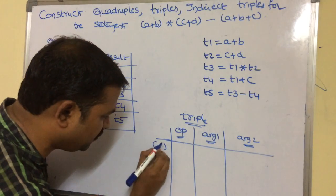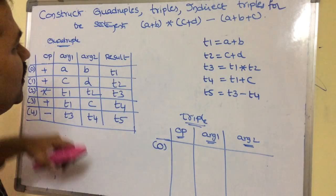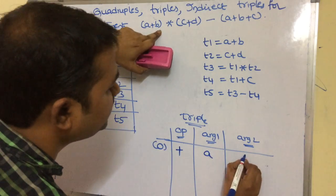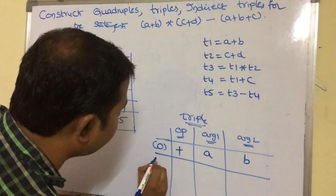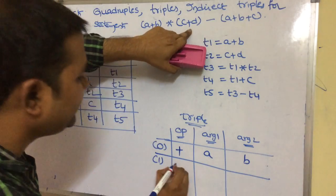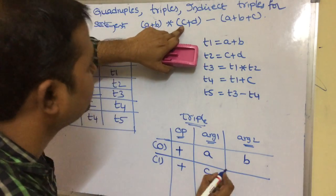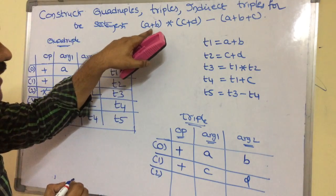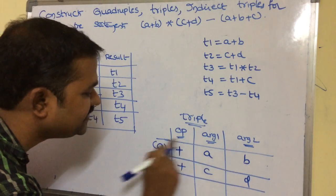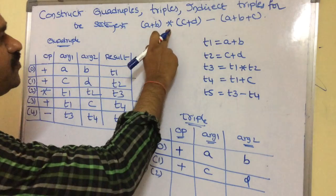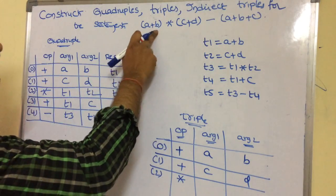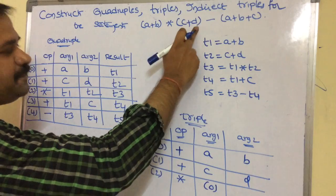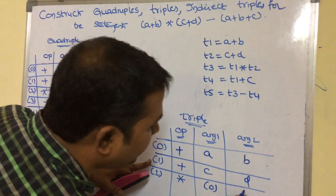Let the first instruction address be 0: operation is plus, argument 1 is a, argument 2 is b. The second instruction is at address 1: operation is plus, argument 1 is c, argument 2 is d. The third instruction is at address 2: here the a plus b result is available at address 0, so argument 1 is 0. The c plus d result is available at address 1, so argument 2 is 1. Operation is star.